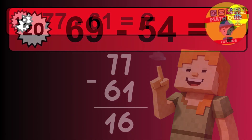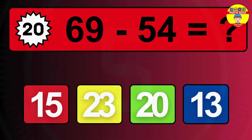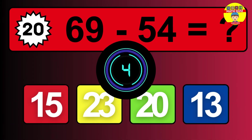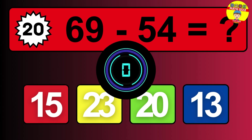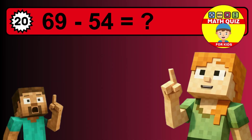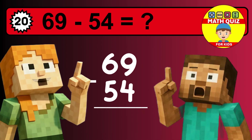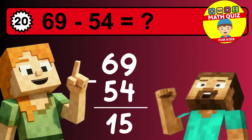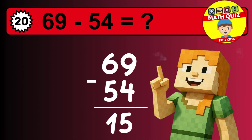What is 69 minus 54? Time to think. We go to the tens: 6 minus 5 is 1. The final answer is 15.